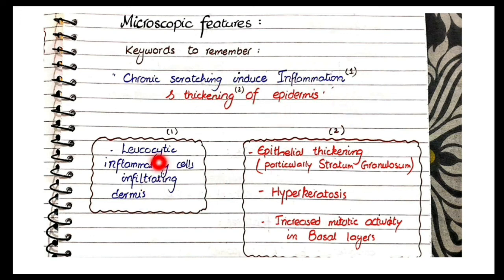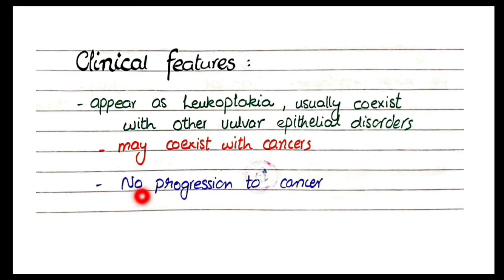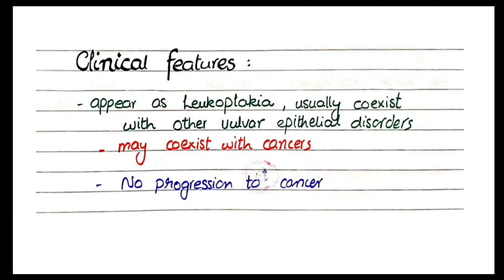In lichen simplex chronicus you will see leukocytic inflammatory cells, epithelial thickening, hyperkeratosis, and increased mitotic activity in basal layers. Grossly, it also appears as leukoplakia — white-colored patches or plaques — and usually coexists with other vulvar epithelial disorders, since it develops in response to itching from another inflammatory condition. Like lichen sclerosis, lichen simplex chronicus is itself benign but can coexist with cancers.